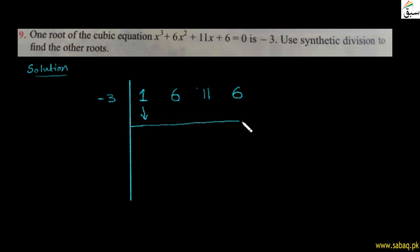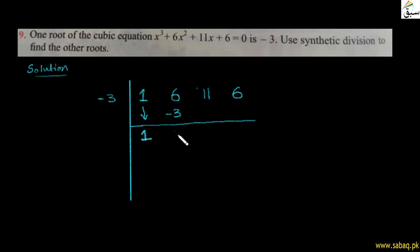Coefficients لکھیں گے اور constant 6 ہے۔ جس number سے divide کرنا ہے — یعنی given factor −3 — اسے باہر لکھیں گے۔ اب پہلا coefficient 1 as it is نیچے آئے گا، اور 1 کو −3 سے multiply کریں تو −3 آئے گا۔ پھر 6 + (−3) = 3 آئے گا۔